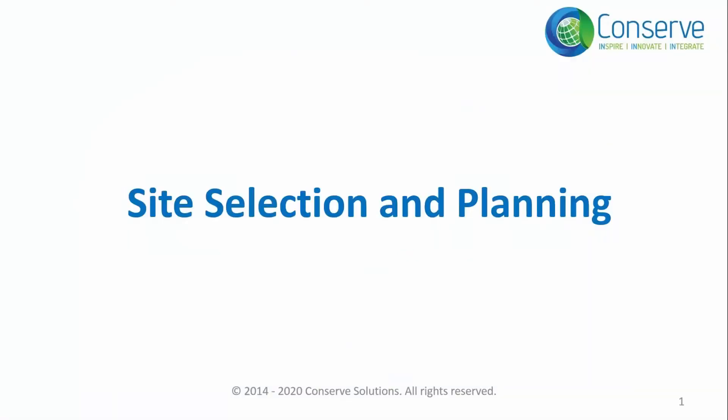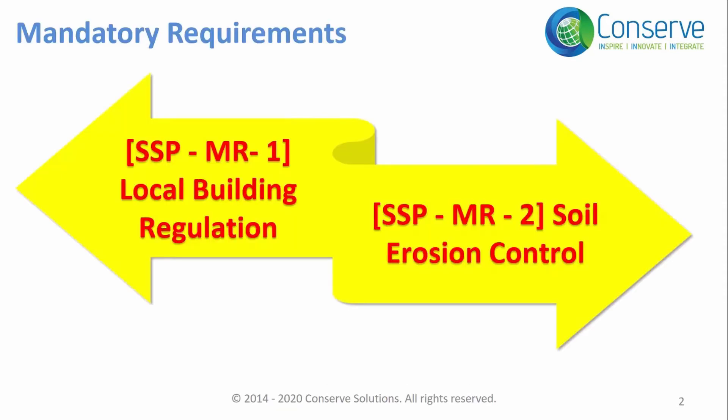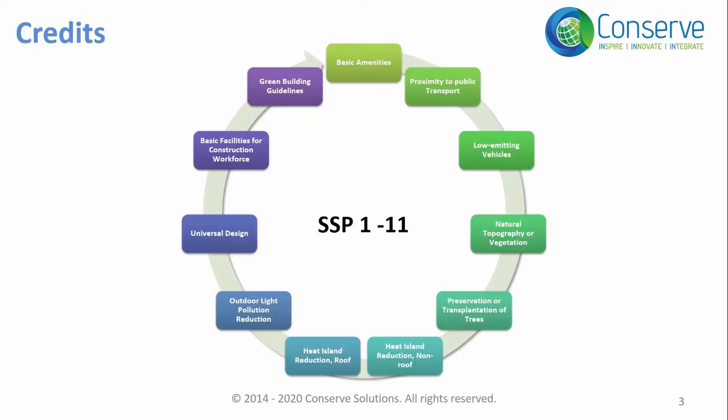The next category in the rating system is site selection and planning. There are two mandatory requirements and 11 credits in this category. For ease of understanding and studying for the IGBCAP examination, we will group the mandatory requirements and credits in site selection and planning into six groups.